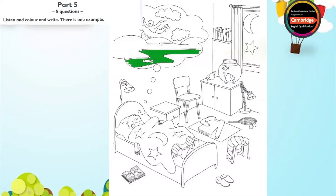Part 5. Look at the picture. Listen and look. There is one example. Can you colour some of this picture now, please?